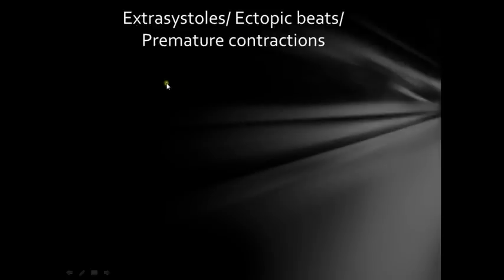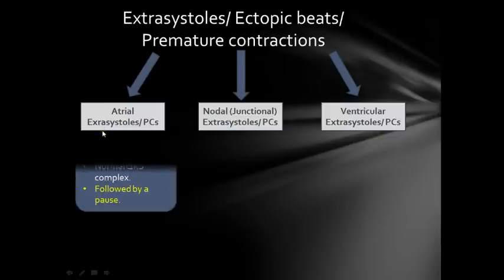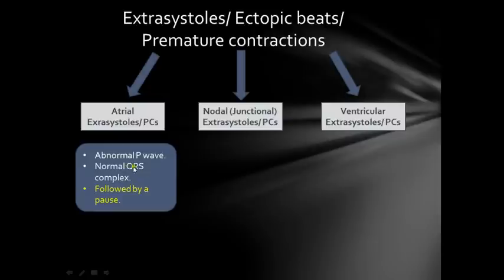They are classified into three main categories. The first is called atrial extrasystoles or premature contractions, meaning originating from the atria. The second is nodal or junctional extrasystoles, originating from the AV node. And the third is ventricular extrasystoles, originating from the ventricles.